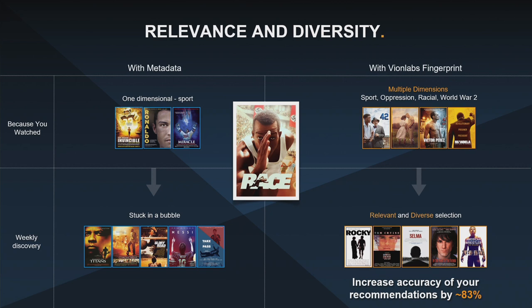With our partners at ContentVise, we could actually prove that with this type of data, we increased the accuracy of recommendations by 86% compared to old-school metadata — which is huge. And the coverage of the actual library, because it's utilizing the video files, increased by 56%, meaning content usually hidden at the bottom of a library is now being surfaced and part of the algorithm and the recommendations.